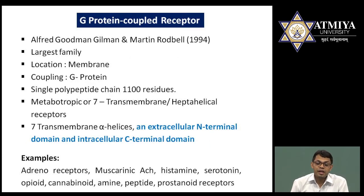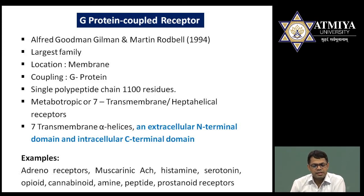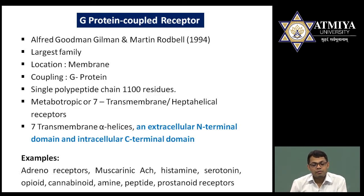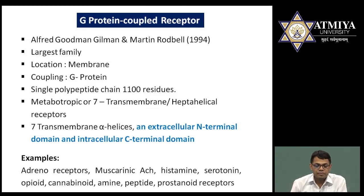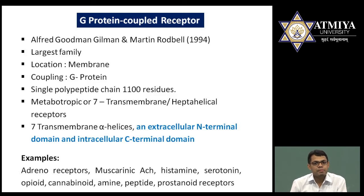The next very important receptor is the G protein-coupled receptor (GPCR). Goodman, Gilman, and Martin Rodbell discovered GPCRs in 1994, and since then several families have been identified. GPCRs are considered the largest family of receptors. They are located at the plasma membrane and coupled with G proteins. They are generally a single polypeptide chain of about 1100 residues and are also known as seven-pass or seven-transmembrane receptors because they cross the membrane seven times.